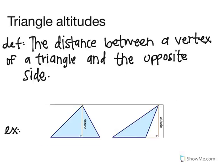Our next subject is triangle altitudes. The definition is the distance between a vertex of a triangle and the opposite side. It is essentially the height of the triangle. Starting with the triangle on the right, you take the highest vertex, which is this one right here, and create a right triangle to the opposite side. So this is the altitude.